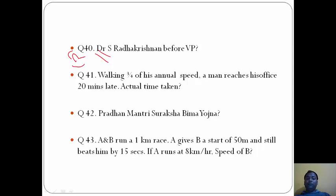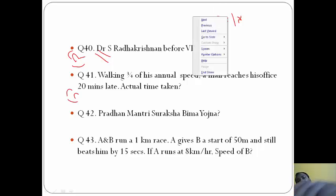Question 44: Walking three-fourths of his usual speed, a man reaches his office 20 minutes late. Actual time taken is 60 minutes, that is C. How? Suppose distance covered is x, speed is y.